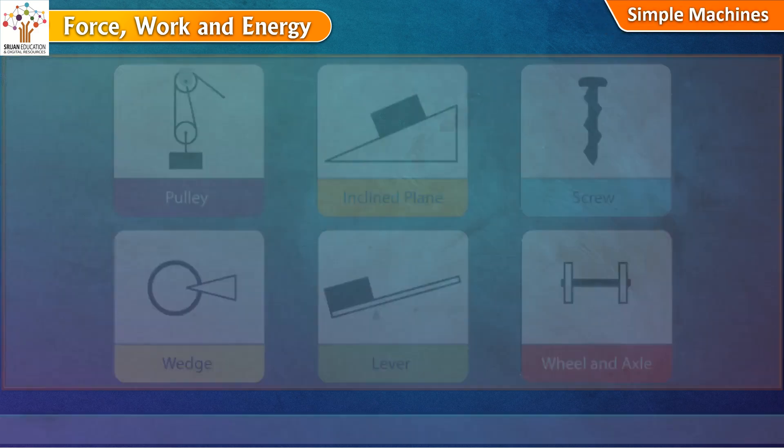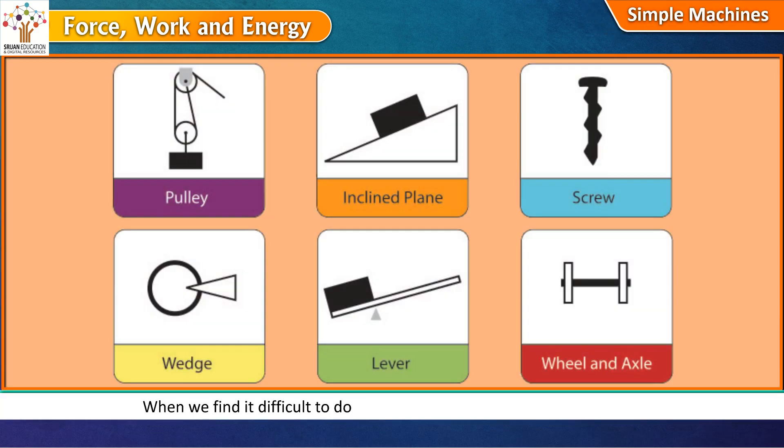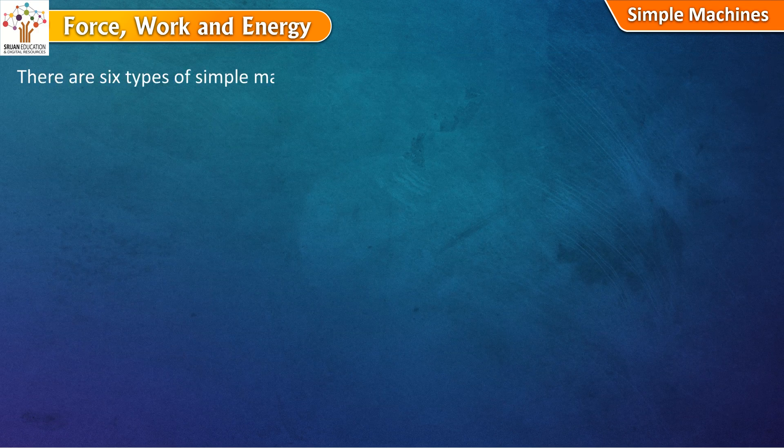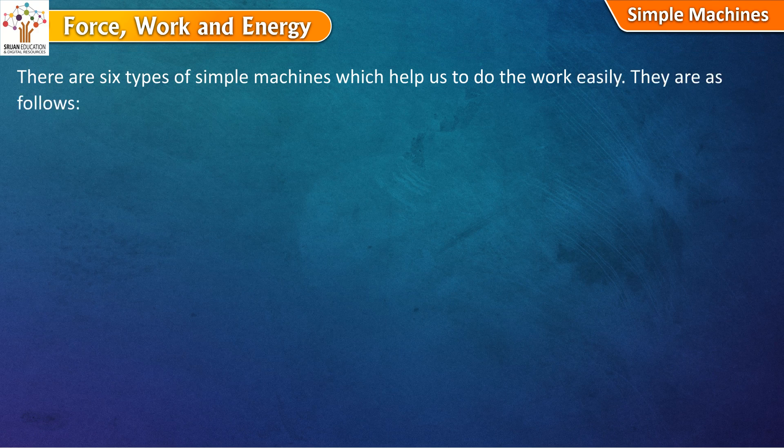Simple machines. When we find it difficult to do work with our hands, we use some tools. These tools help us do the work. They are called simple machines. They make our work easier. There are six types of simple machines, which help us to do the work easily. They are as follows.